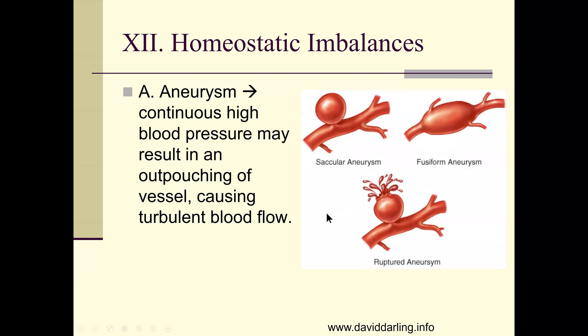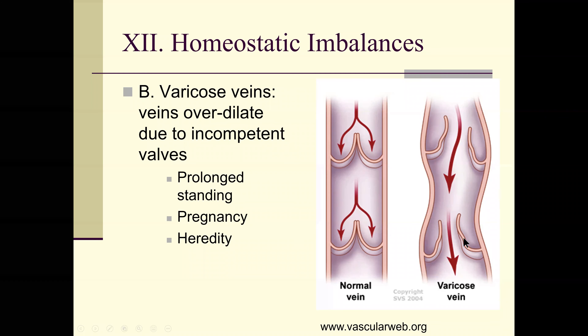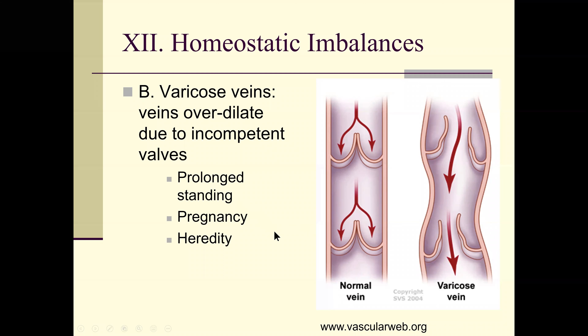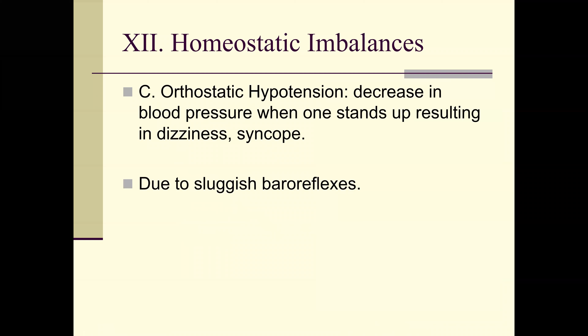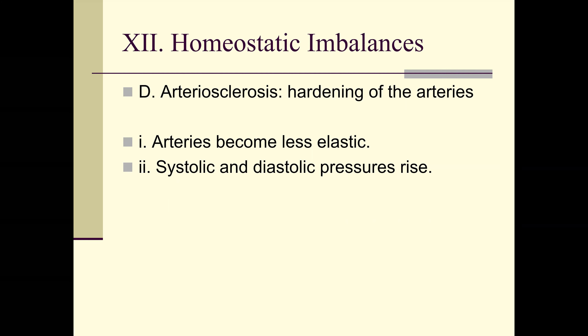Pathologies: aneurysms can form from continuous high blood pressure in areas with weakened vessel walls — worst case they rupture. Varicose veins occur because valves are incompetent, allowing backflow, building pressure, and dilating the veins — caused by prolonged standing, pregnancy, or heredity. Orthostatic hypotension is decreasing blood pressure when standing up, resulting in dizziness and syncope due to sluggish baroreceptor reflexes. Atherosclerosis is hardening of arteries — they become less elastic and both systolic and diastolic pressures rise.